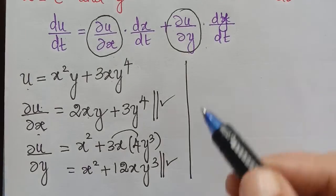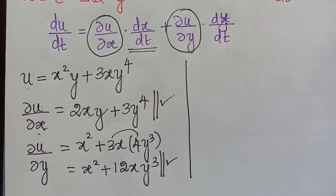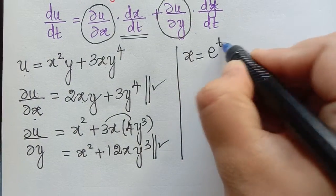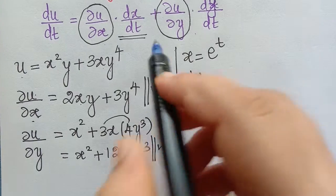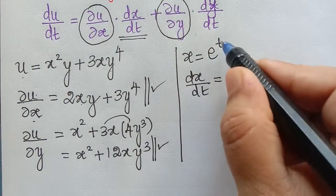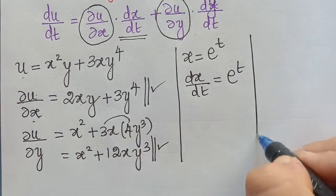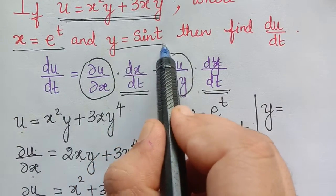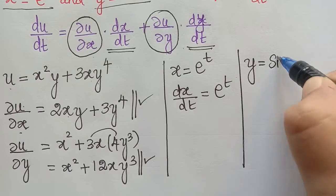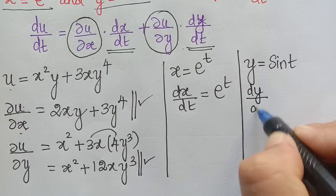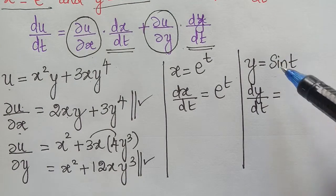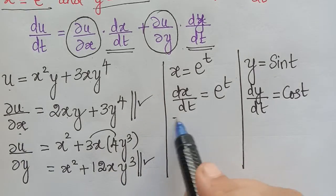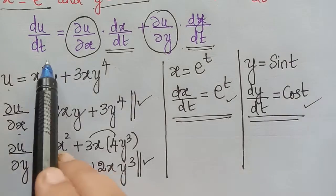Next, in the formula we need dx/dt. Since x = eᵗ, we have dx/dt = eᵗ. We also need dy/dt. Since y = sin t, dy/dt = cos t. Now we have found ∂u/∂x, ∂u/∂y, dx/dt, and dy/dt — all four values to substitute into the formula.